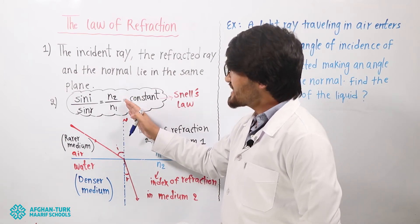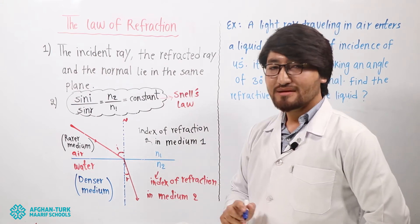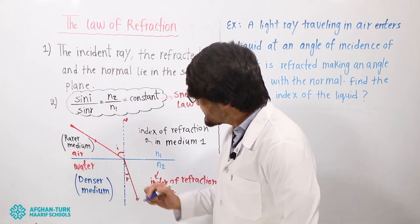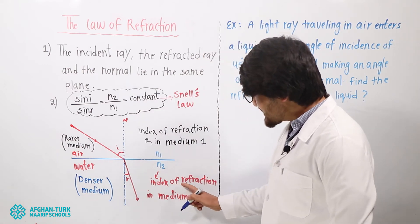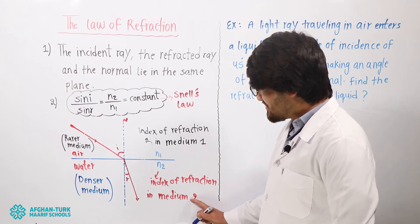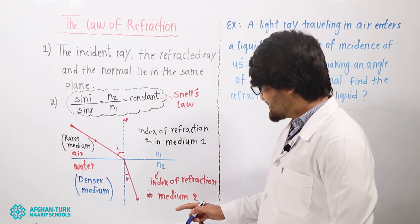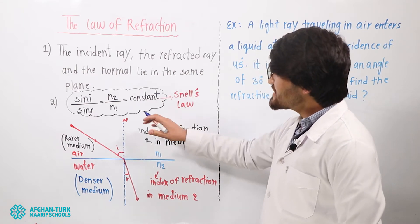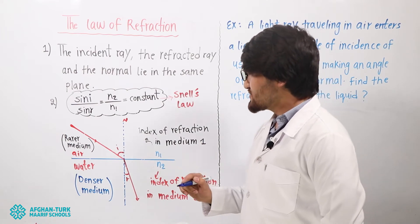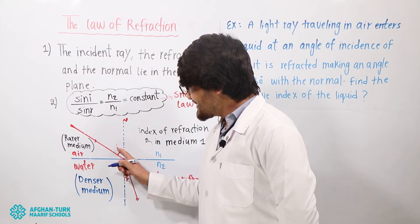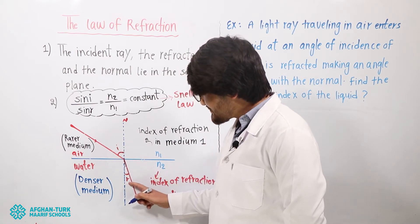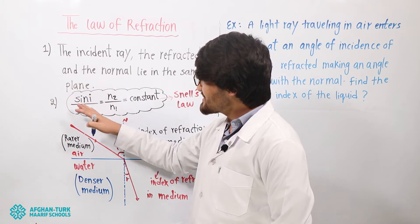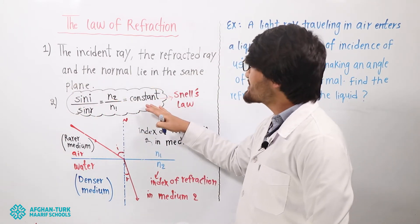This is also called Snell's law: sine i over sine r equals n2 over n1. What is n2? It is the index of refraction in medium 2 — medium 2 may be water, glass, or something else. And n1 is the index of refraction in medium 1. Also, when the angle of incidence increases, the angle of refraction also increases. The ratio of these angles gives a constant number — this is the second law of refraction.